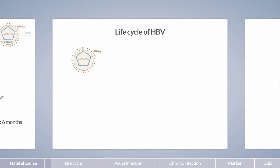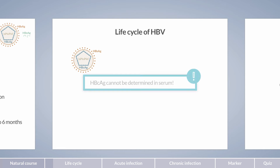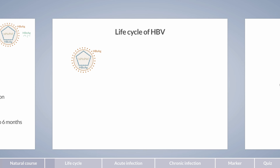Second, the HBc antigen is part of the capsid. The C stands for core because the antigen is located in the core of the virus. The HBc antigen cannot be determined in serum as it is hidden within the virus. However, infected hepatocytes express HBc on their surface, which allows the human body to develop antibodies to the HBc antigen. Anti-HBc antibodies can be detected in serum.